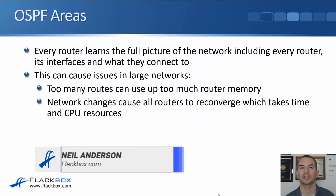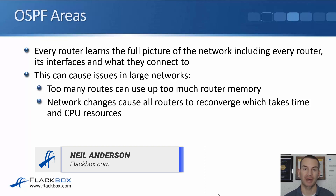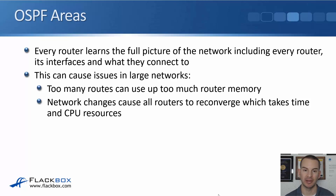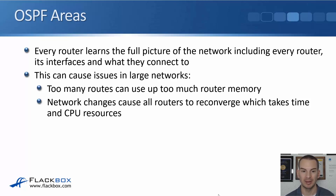In this lecture, you'll learn about OSPF areas. As you learned already with link state routing protocols, every router learns the full picture of its part of the network, including every router, its interfaces, and what they connect to. This can cause issues in large networks because every router knows about every link, resulting in a lot of routes in its routing table, which can take up too much memory.